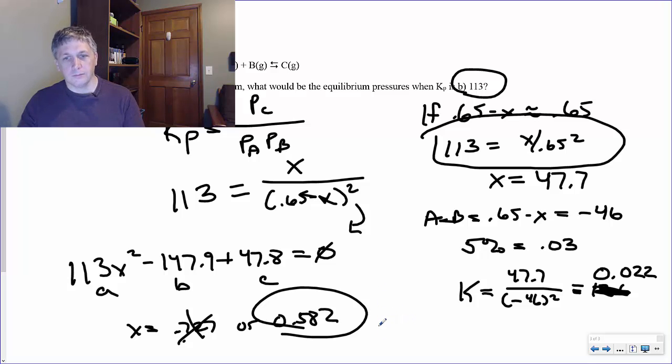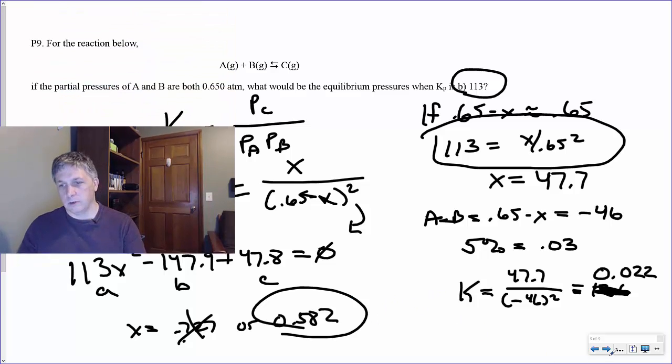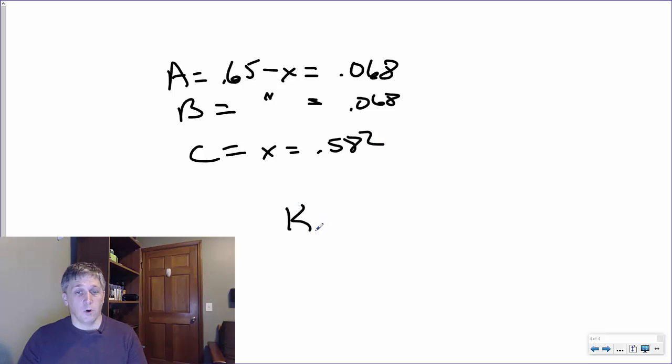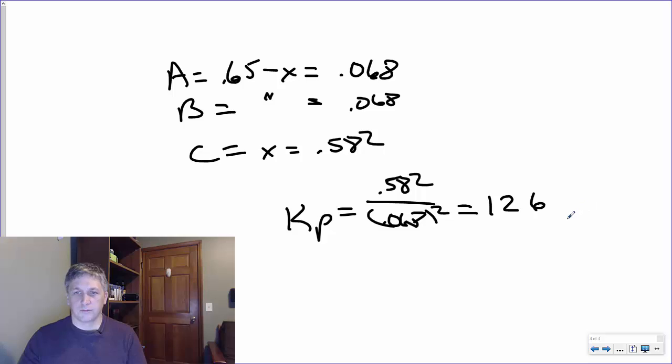So in this case, 0.65 minus 0.72 would give you a negative concentration for your two reactants. So that can't work as a value of X. The other guy, though, should work out. And it does. So A will be 0.65 minus X, which gives you 0.068. B is the same thing. C is just X, and that'll be 0.582. And if you want to check your work, you just plug in these values into your expression of K. So it'll be 0.582 over 0.068 squared. And this equals 126. So our original K was 113. Yeah, they're not that different. They're reasonably close, especially when you go through all the hassle of figuring out a quadratic. You're going to get a little error here or there. So yeah, that checks out okay.